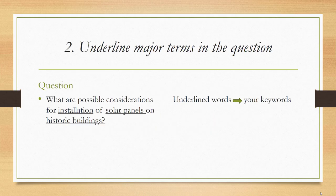Once you have your research question written down, the next step is to translate it into something that a library database might understand. Unlike many web search engines, most library databases do not allow for natural language searching. So as a researcher, you need to do some additional work to access the type of academic sources you'll need for the tech report. The first step is to identify the keywords in your research question — these are the nouns and verbs that make up the core of your question. As you can see, I have underlined installation, solar panels, and historic buildings as my keywords. Your question might have a different number of keywords depending on your topic.